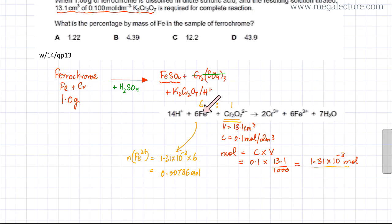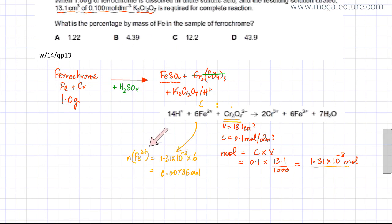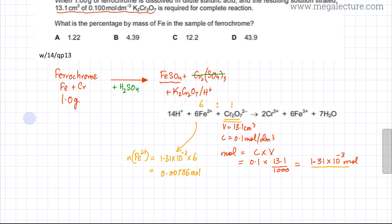We have found the moles of Fe²⁺ to be 0.00786 moles. All the iron ions came from the iron atoms that were present in the ferrochrome. So the moles of Fe atoms is equal to the moles of Fe²⁺ ions, which is also 0.00786 moles.